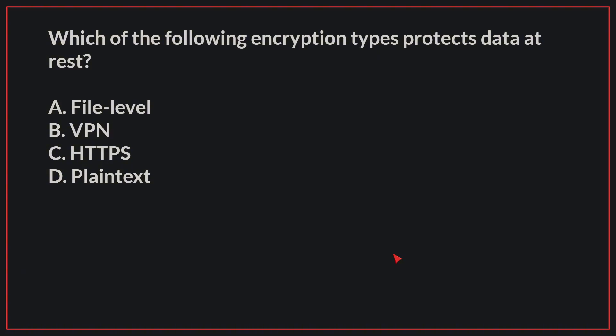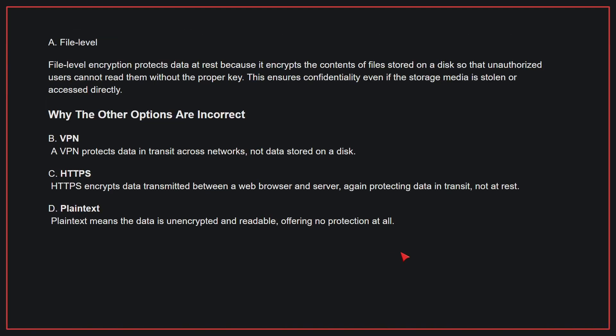Which of the following encryption types protects data at rest? The correct answer is A, file level. File level encryption protects data at rest because it encrypts the contents of files stored on the disk so that unauthorized users cannot read them without the proper key. This ensures confidentiality even if the storage media is stolen or accessed directly.